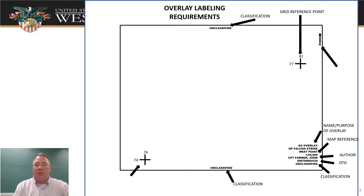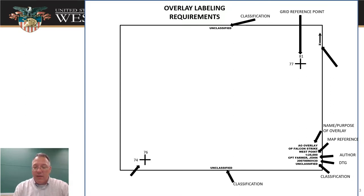Every overlay has to go around with basic requirements written in black. You need 'unclassified' written in three places: top, bottom, and in the info block at the bottom. You also need your two grid reference crosshairs somewhere out of the way on the map with the numbers, a north-seeking arrow, and then the info block needs a title or name, a reference to the map you're on, the name of the person who made the overlay, and a date-time group of when it was made.